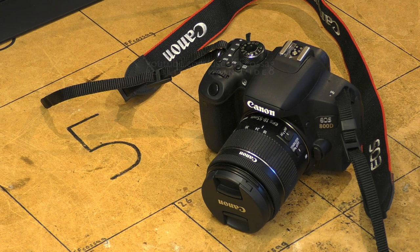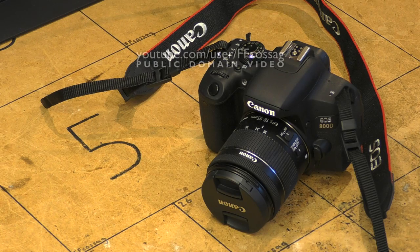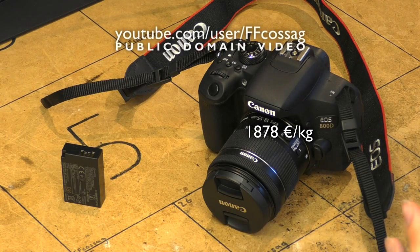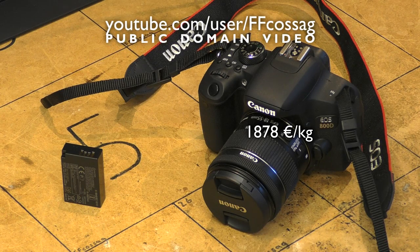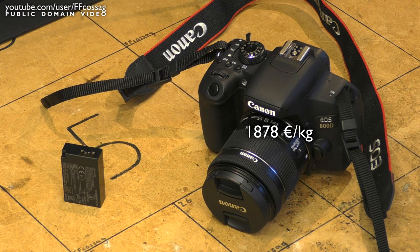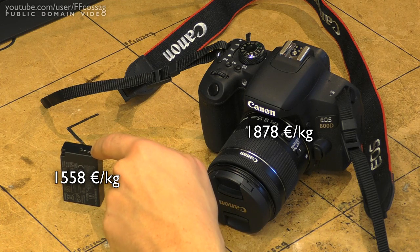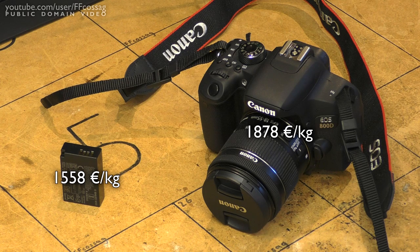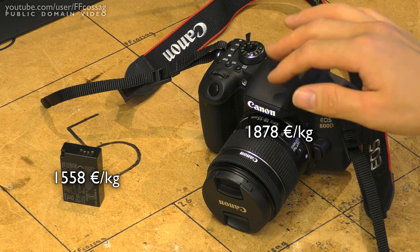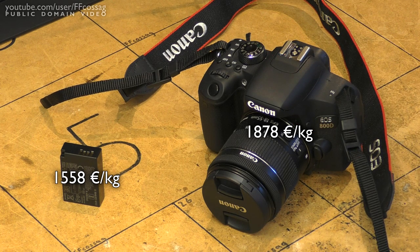This is a Canon EOS 800D which weighs 532 grams and costs 999 euros. This is a Canon LP E17 battery pack which weighs 43 grams and costs 67 euros. That means that the technology which goes into making this battery costs 84% per weight of the amount of technology which goes into making this whole camera. And I intend to find out why.